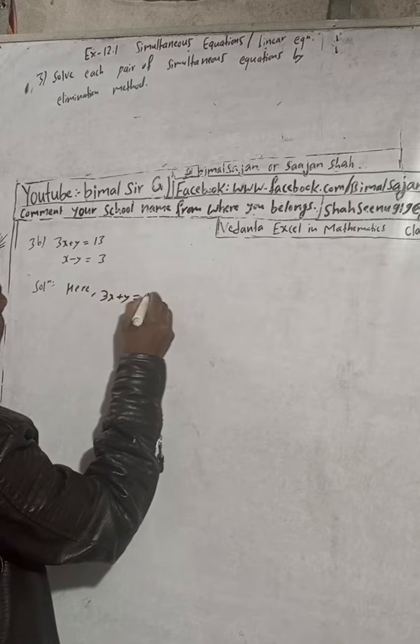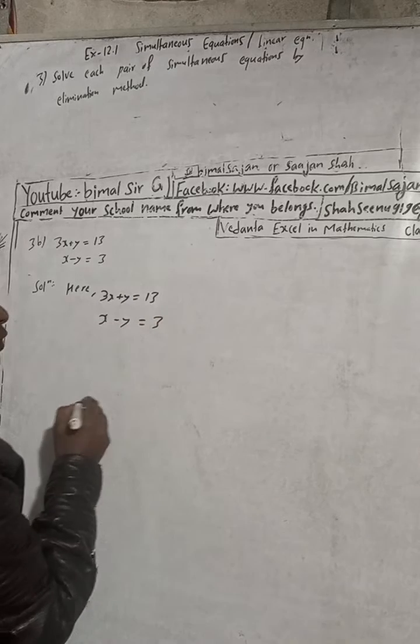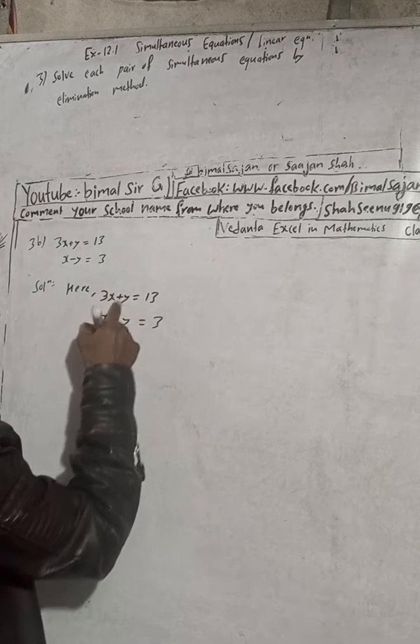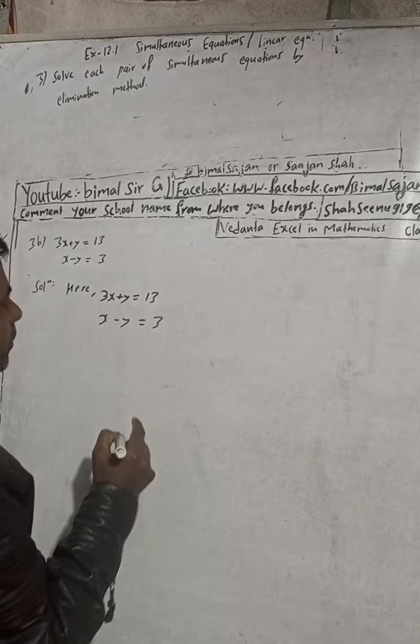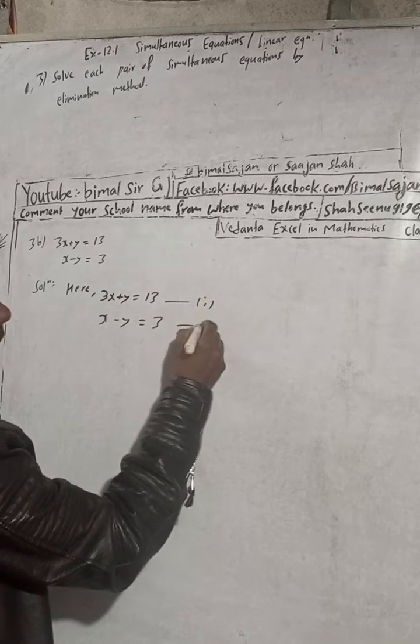3x plus y is equal to 13, and x minus y is equal to 3. Now you can see that when we add these, one will be eliminated. So adding, this is our equation one, this is our equation two.